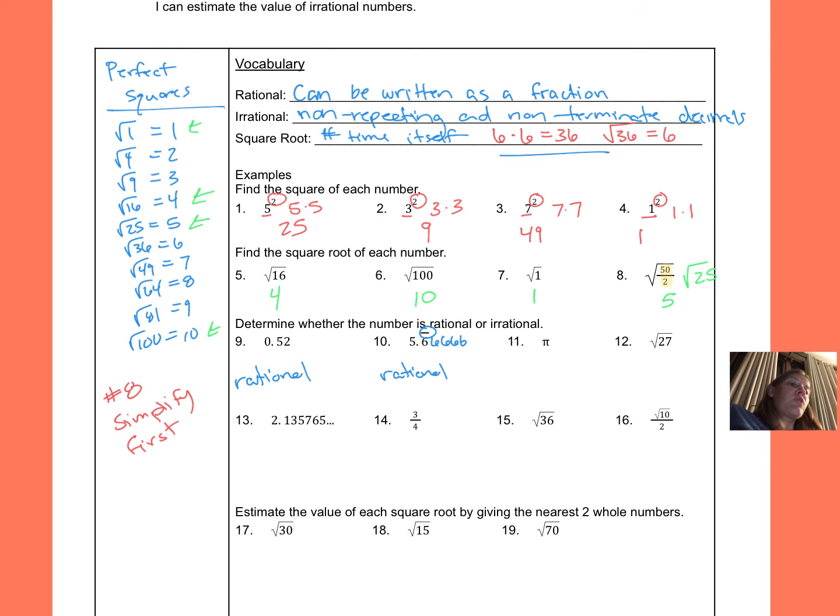Pi stands for a number that keeps on going and never stops. It is 3.14, and then it keeps on going, there's no pattern to it. That's going to make it an irrational number. If I were to put the square root of 27 into my calculator, I would also get a decimal that does not stop and does not repeat. That makes it irrational.